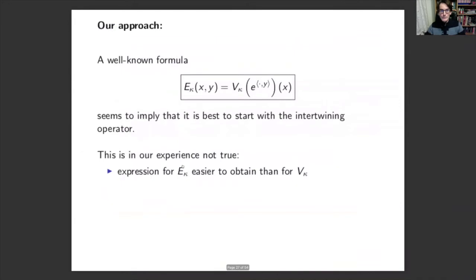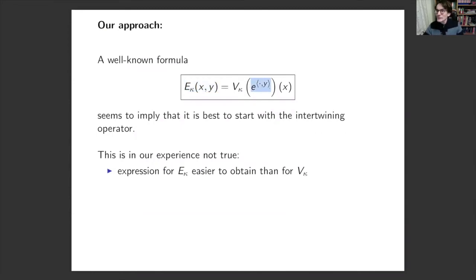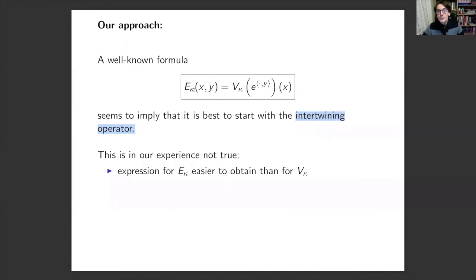There is a well-known formula that the Dunkl kernel is given by the action of the intertwining operator on the exponential function — the standard kernel of the Fourier transform. This seems to imply it is easiest to first determine the intertwining operator and then find the Dunkl kernel E_kappa, but in our experience it seems easier to first determine E_kappa and use that knowledge to determine V_kappa. I'll show a formula that allows you to do that. Also, the exponential function is positive, the intertwining operator maps positive functions to positive functions, so the Dunkl kernel should also be positive.